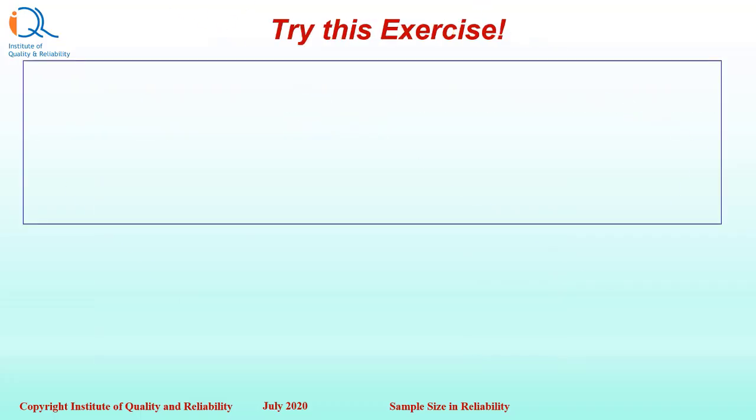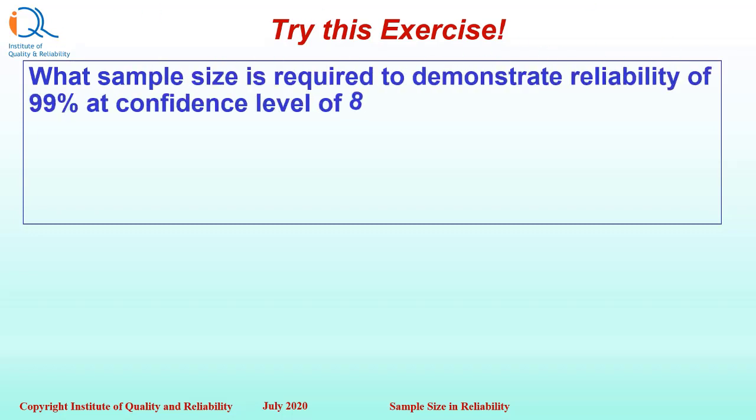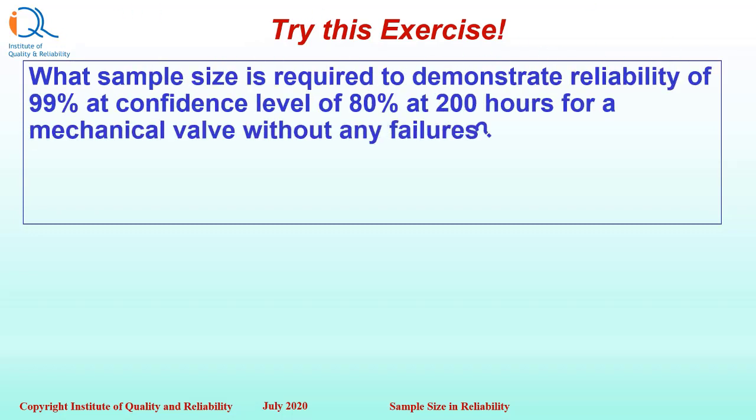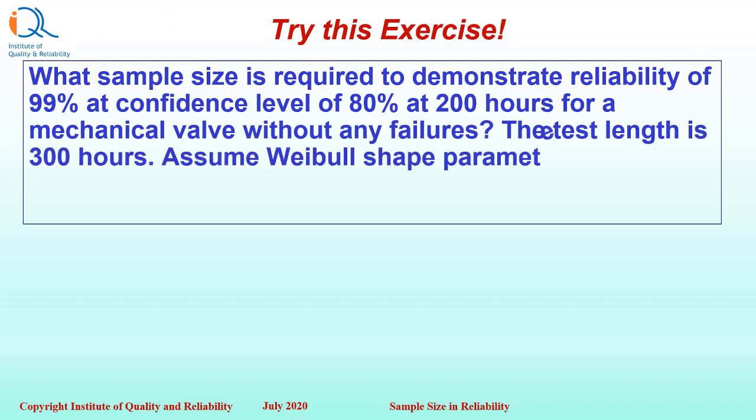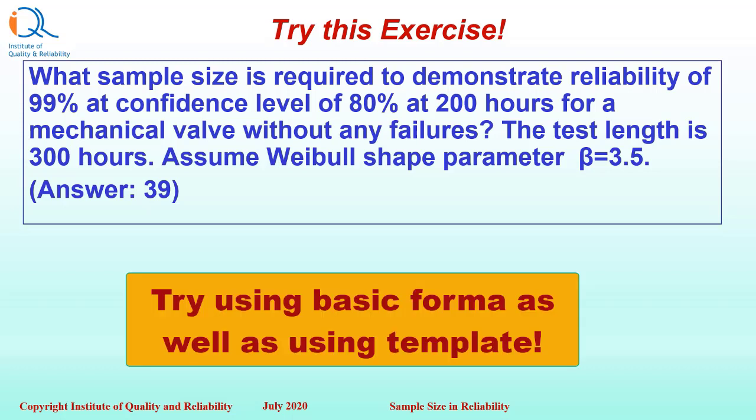Now try this exercise. What sample size is required to demonstrate reliability of 99% at confidence level of 80% at 200 hours for a mechanical valve without any failure? The test length is 300 hours. Assume Weibull shape parameter as beta equals 3.5. Try this exercise using basic formula as well as using template.